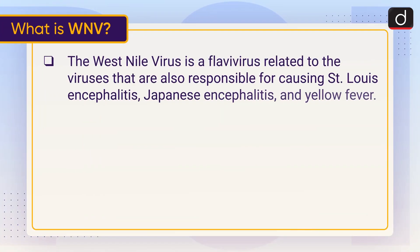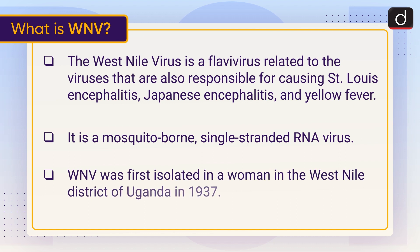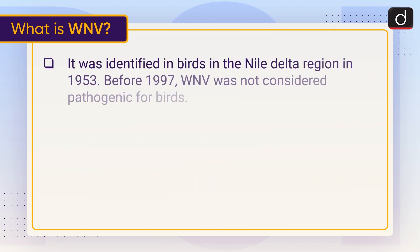The West Nile Virus is a flavivirus related to the viruses that are also responsible for causing St. Louis encephalitis, Japanese encephalitis, and yellow fever. It is a mosquito-borne single-stranded RNA virus. WNV was first isolated in a woman in the West Nile district of Uganda in 1937.